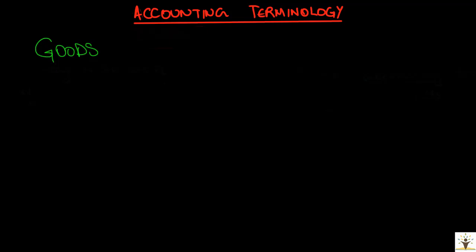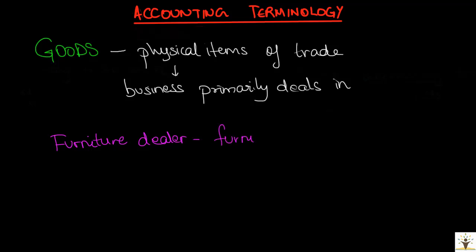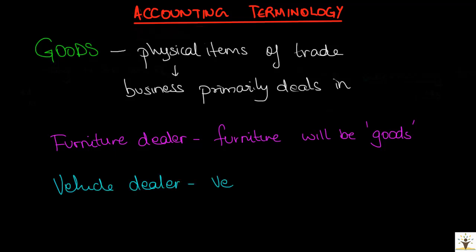The next very important term is goods. Goods are physical items of trade or the products that the business normally deals in. Every business is set up to deal in certain categories of products. For example, a furniture dealer that normally buys and sells furniture — for such a business, furniture is goods. And for a vehicle dealer that deals in vehicles, vehicles will be goods. But vehicles are not goods for a furniture dealer, and furniture is not goods for a vehicle dealer.